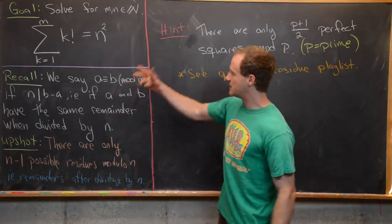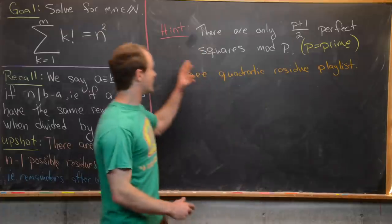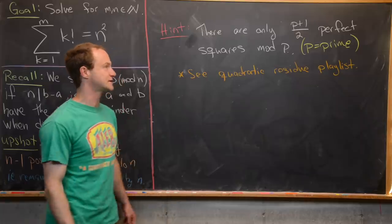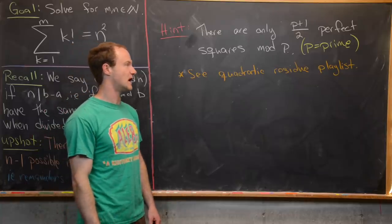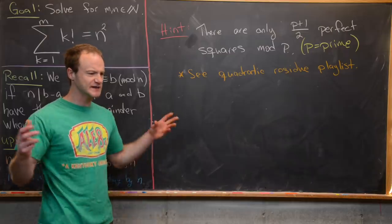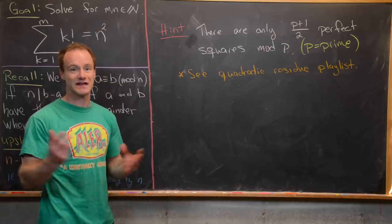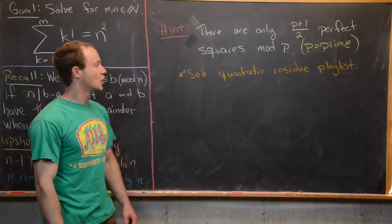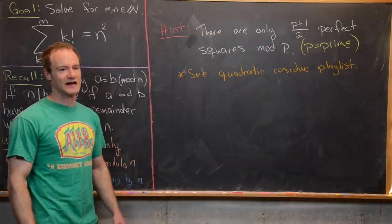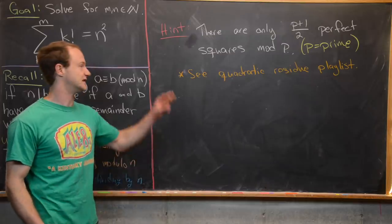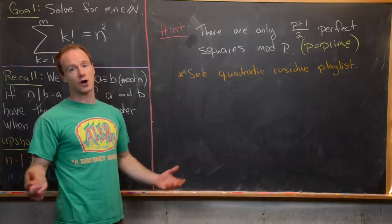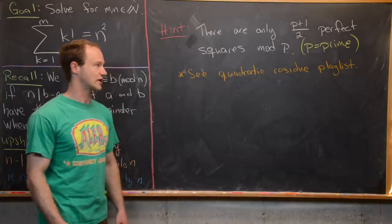We have a big hint: there are only (p+1)/2 perfect squares modulo p, where p is a prime — specifically an odd prime. This whole notion of quadratic residues is only really well-defined when we're talking about odd primes. If you want to see more about the theory behind this, see the quadratic residue playlist — I taught a number theory class and made videos for the entire class, including a sub-playlist on the Legendre symbol and quadratic residues.